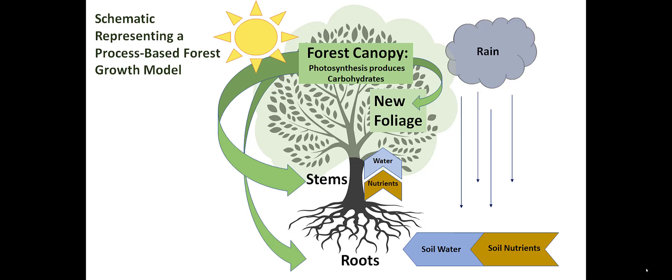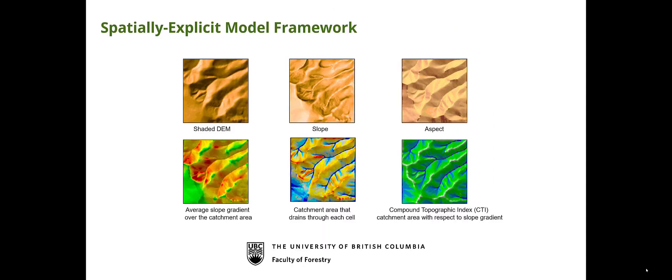The real benefit of 3PG is because it's so simple, we can run it over large areas. We've had a massive increase in spatial data that we can run models with. We have terrain models that give us slope and aspect, and from slope and aspect we can predict the radiation we get from the sun. Using the position of slope on the landscape, we can work out water availability in terms of the flow of water across the landscape, so we can run these models at very fine spatial resolutions.